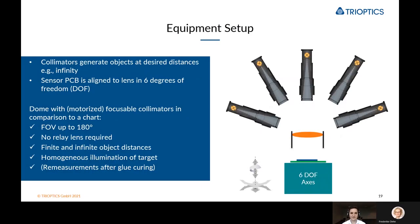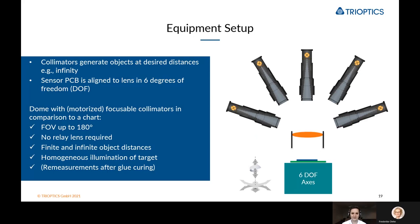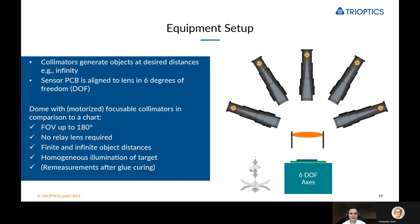How do we actively align camera modules? We use collimators, which you can see on the right. These collimators generate objects at desired distances — for example, at infinity. A collimator uses a light source and a reticle to project the object of the reticle through a collimator lens onto the lens of the camera that we're trying to build. The lens is held in place, and the sensor PCB, which is connected to a six-degrees-of-freedom axis, is then aligned to the lens.